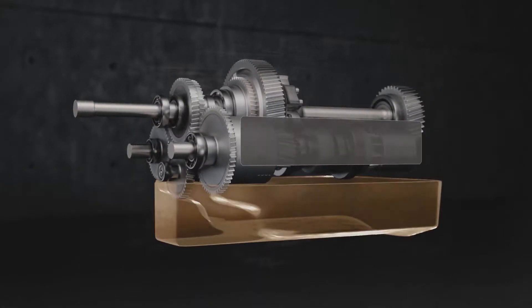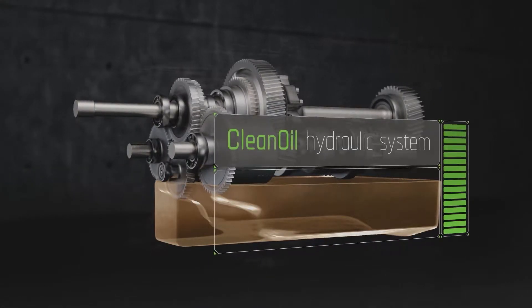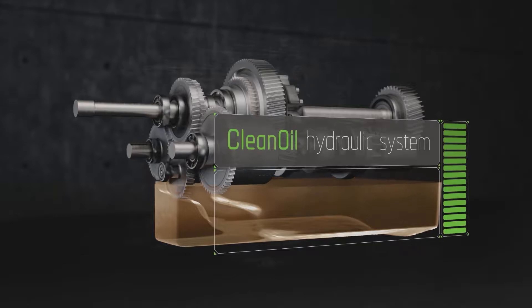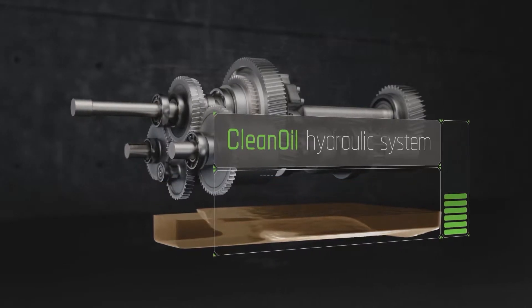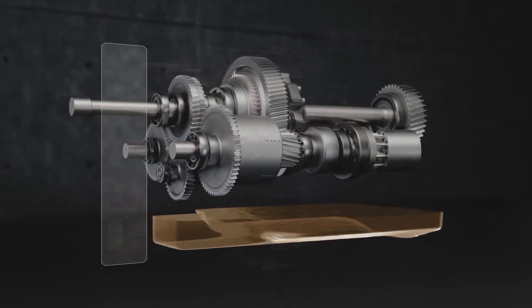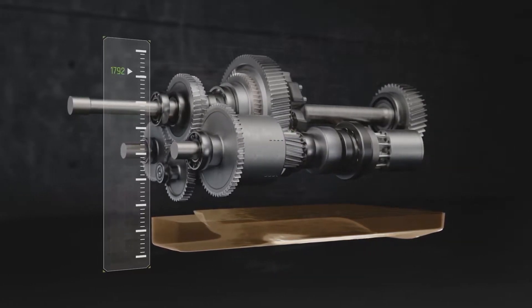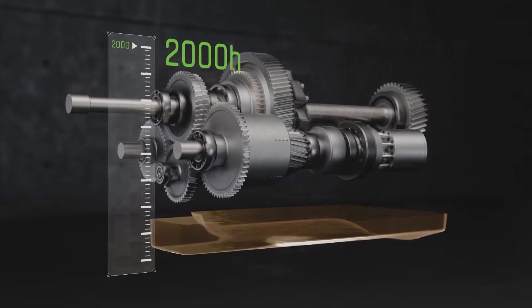Thanks to the separate clean oil hydraulic system, the amount of oil in the transmission has been optimized, thus avoiding splash losses and increasing efficiency. In addition, the transmission oil change intervals have been extended to 2,000 hours.